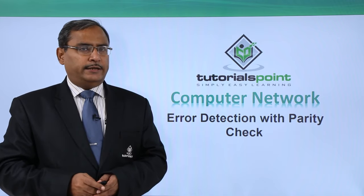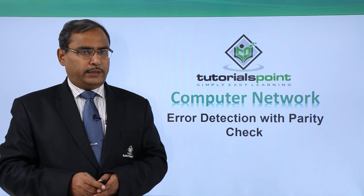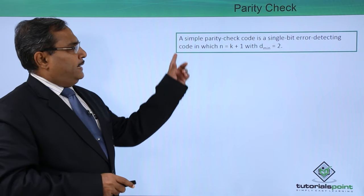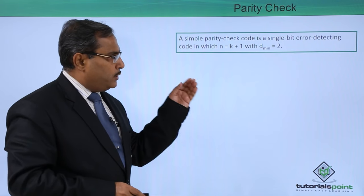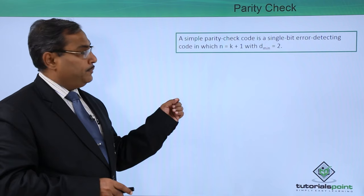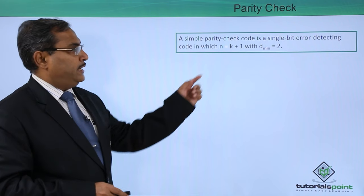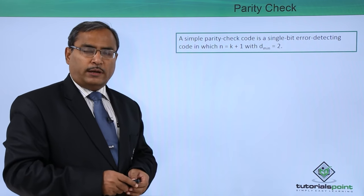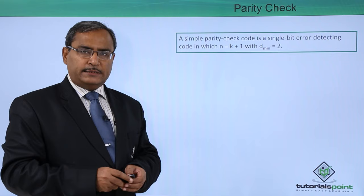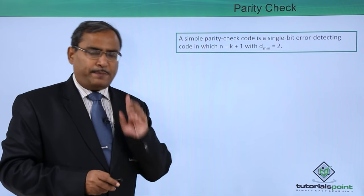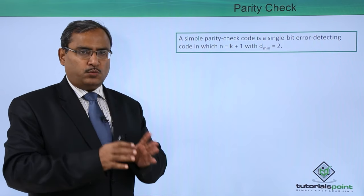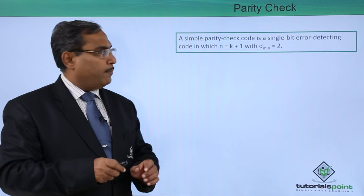Let us discuss error detection with parity check. A simple parity check code is a single bit error detecting code in which n is equal to k plus 1. That means, if we have k number of data bits, then we can add one extra parity bit, so that we will be transmitting k plus 1, that is n number of bits.